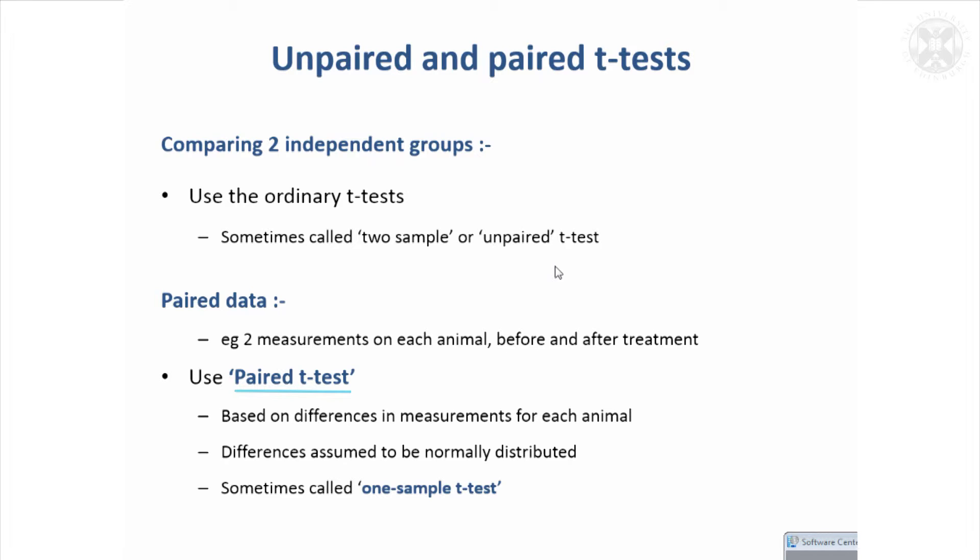It's still going to be about testing the null hypothesis that the difference is different from zero from a null distribution. But you work with the differences rather than the individual means of the groups. You work with the means of the differences and their variability. That's the paired T test. It's sometimes also called a one sample T test because you've just got one sample of differences once you've taken the differences.